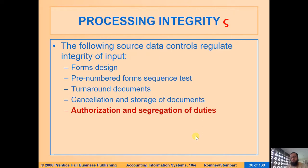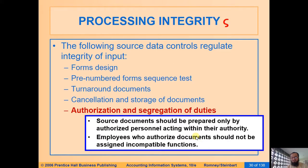For all source documents, authorization and segregation of duties must be in place. We need to make sure the right person has executed the document and that signatures or other controls confirm the authorization. For example, a sales invoice must contain signatures or electronic controls confirming it was issued by the right person. Segregation of duties requires separating three duties — especially for assets: custody of the asset, authorization of the asset's movement, and recording of the asset in accounting reports — to enhance controls and minimize fraud.